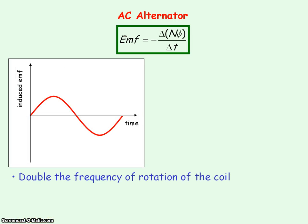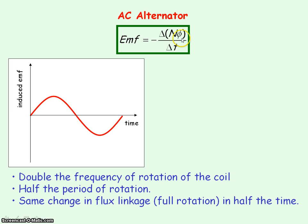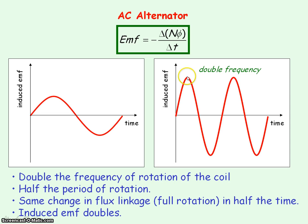If we were to double the frequency of rotation of the coil, by doubling the frequency we would halve the period of rotation. So we'd have the same amount of flux linkage but in half the time, meaning the rate of change of flux linkage would double and so the induced EMF would double. We would represent the graph with the maximum induced EMF doubled and the period halved. This confirms that the induced EMF is directly proportional to the frequency of rotation, so doubling the frequency doubles the maximum induced EMF.